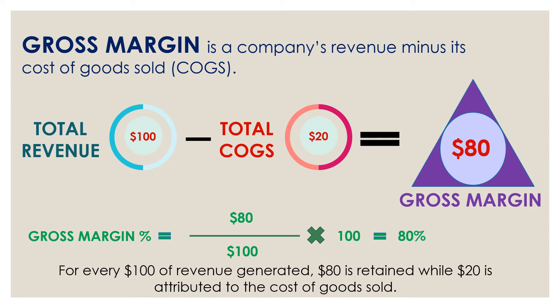What does this mean? For every $100 of revenue generated by Yum Donuts, $80 is retained while $20 is attributed to the cost of goods sold. The retained $80 can be used to pay off general and administrative expenses, interest expenses, rent, or other expenses, and whatever is left after that is the profit of the company. I would strongly recommend you all to go and find out what the gross margin of your company is.